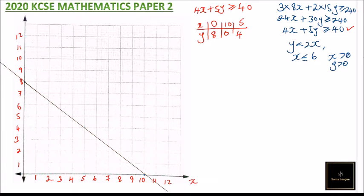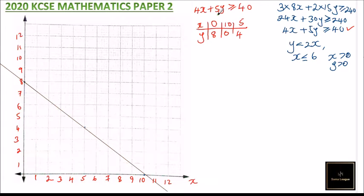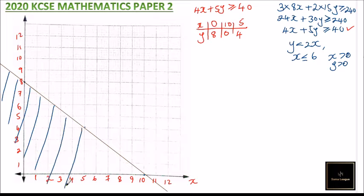Now we find the side to shade off. We test the point (0, 0): 4(0) + 5(0) = 0, which is not greater than 40, so that side does not satisfy the inequality. We test (10, 10): 40 + 50 = 90 ≥ 40, which is correct. So we shade off the side containing (0, 0), which does not satisfy the inequality.